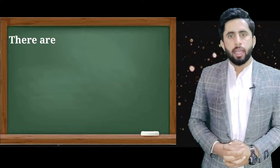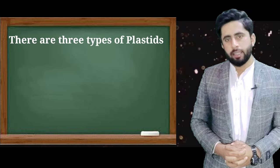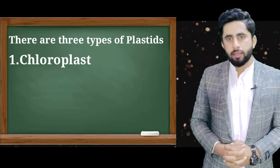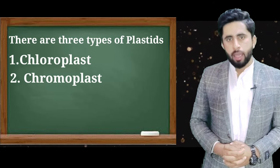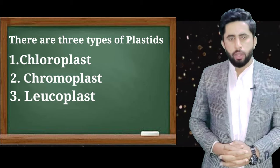There are 3 types of Plastids: Chloroplast, Chromoplast, and Leucoplast.